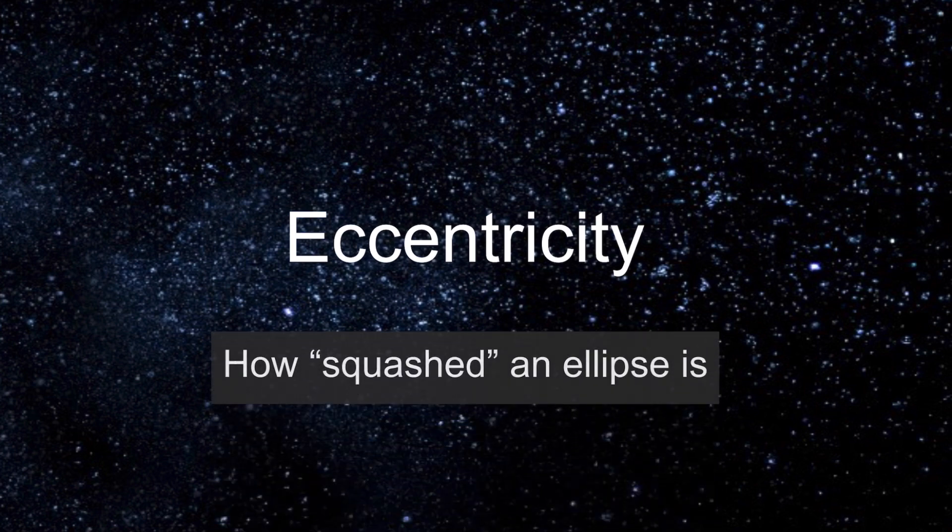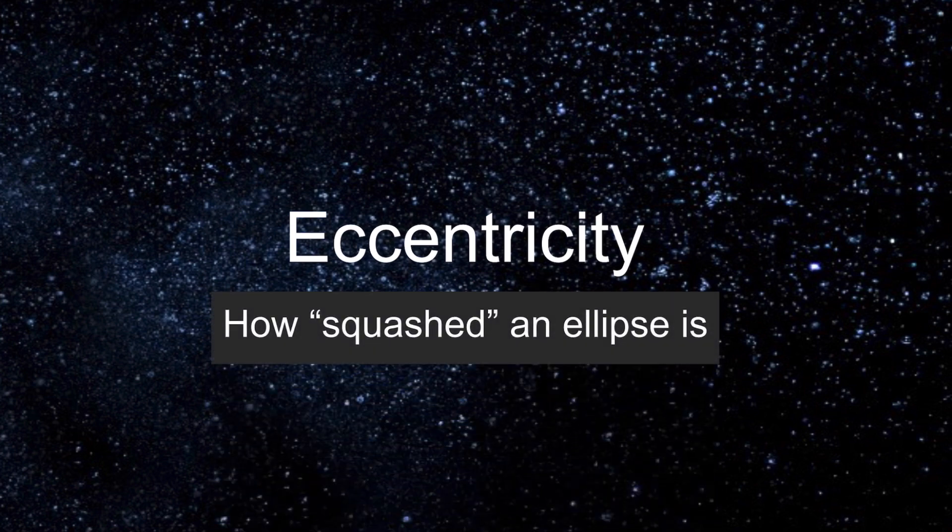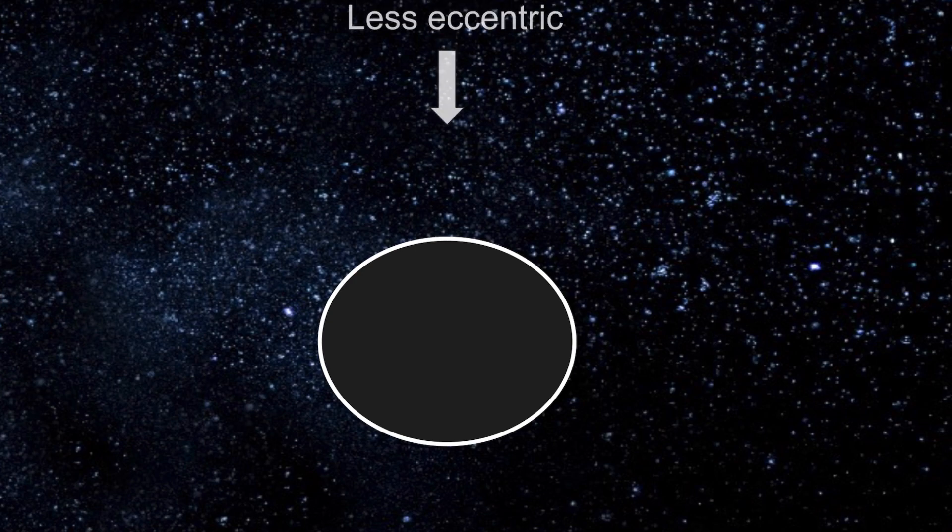How squashed an ellipse is depends on a property known as its eccentricity. An ellipse that is more eccentric is more squashed, while an ellipse that is less eccentric is closer to the shape of a perfect circle.